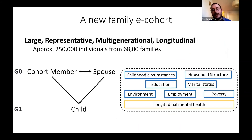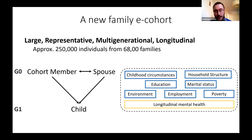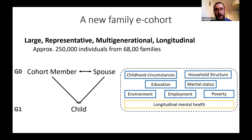The result of this hard work is a large, complex e-cohort that incorporates multiple domains of measures — health measures including mental health and physical health measures, and socioeconomic measures which are important for understanding family context — all of this whilst retaining a family structure, which is very difficult to achieve otherwise.